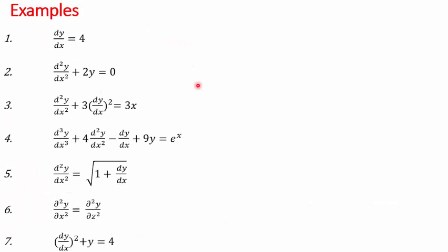Here I have listed some examples of differential equations, and each one is different from the other. The first is dy/dx = 4. The second is d²y/dx² + 2y = 0. The third has an extra term 3(dy/dx)². The fourth is d³y/dx³ + 4 d²y/dx² − dy/dx + 9y = eˣ. The fifth has a square root sign. The sixth uses the partial derivative symbol (∂). The seventh has (dy/dx)². We will return to these once we understand order and degree.